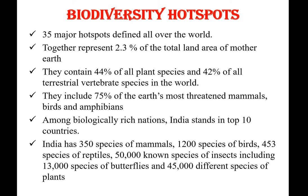35 major biodiversity hotspots are defined all over the world. Together they represent 2.3 percent of the total land area of the Earth. They contain 44 percent of the plant species and 42 percent of all terrestrial vertebrate species all over the world. They also include 75 percent of the Earth's most threatened animals, birds, and amphibians.